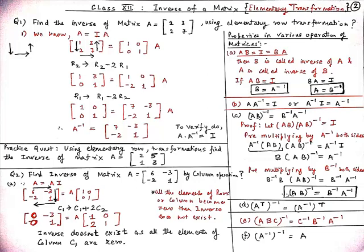Our first property is that when AB = BA = I. From here, if AB is equal to I, then B is equal to A inverse. And if BA is equal to I, then A is equal to B inverse.